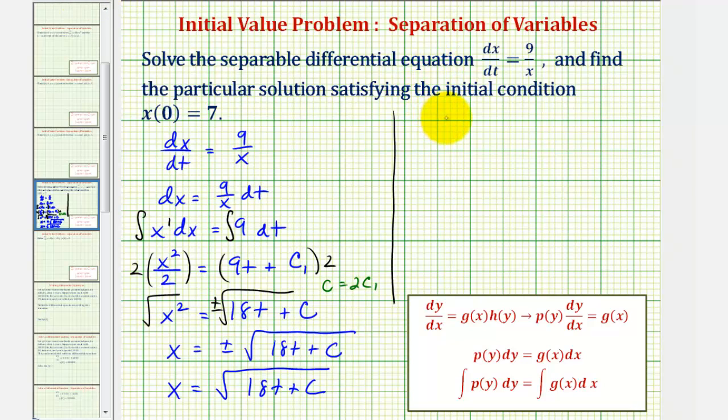So if we know the general solution is x equals the square root of 18t plus c, and if x(0) = 7, that means this function would contain the point with a t-coordinate of 0 and an x-coordinate of 7.